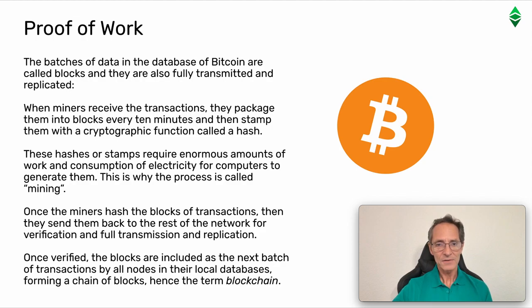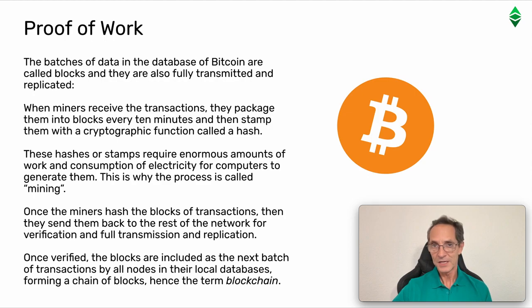Proof of work. The batches of data in the database of Bitcoin are called blocks, and they are also fully transmitted and replicated. When miners receive the transactions, they package them into blocks every 10 minutes and then stamp them with a cryptographic function called a hash. These hashes or stamps require enormous amounts of work and consumption of electricity for computers to generate them. This is why the process is called mining. Once the miners hash the blocks of transactions, they send them back to the rest of the network for verification and full transmission and replication. Once verified, the blocks are included as the next batch of transactions by all nodes in their local databases, forming a chain of blocks — hence the term blockchain.